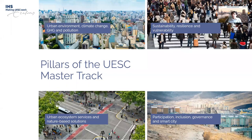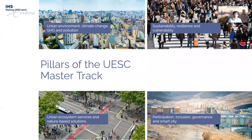There are four pillars of the UESC master track. The first pillar is Urban Environments and Climate Change — greenhouse gas and pollution. This covers climate change adaptation, mitigation, ecosystems in urban landscapes, sustainability and circularity, greenhouse gas emissions assessment, air quality, and heat island effects.